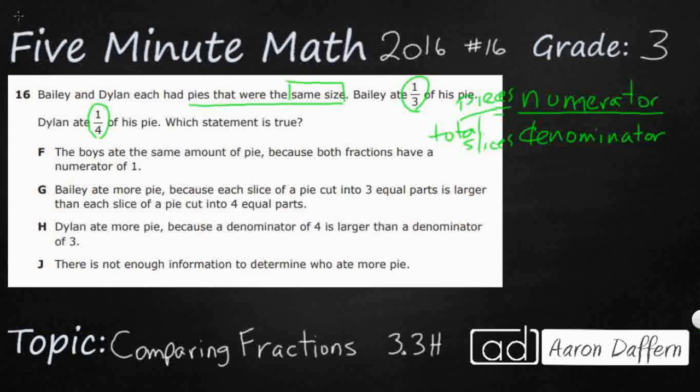So Bailey had one-third. That means one piece out of three total slices. I'm going to draw one-third right here just so we can get a visual of it. And there's my one-third.